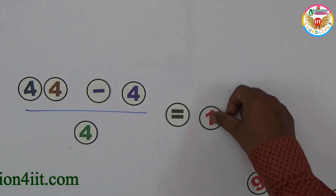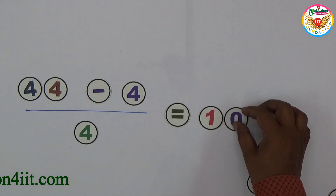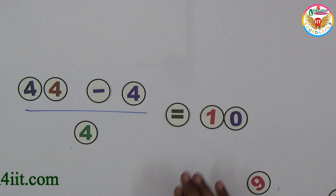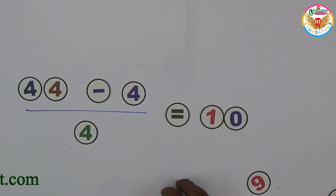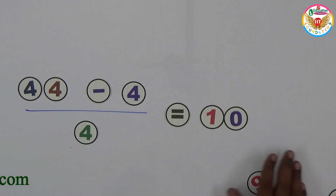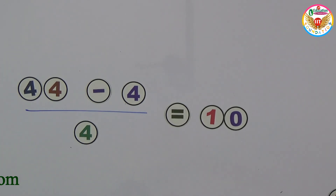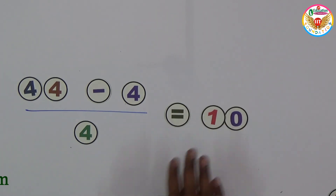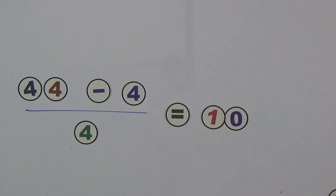So from 1 to 10, we can get all values using four fours. These are the solutions.